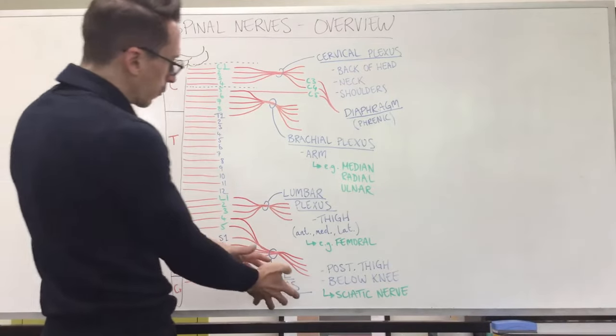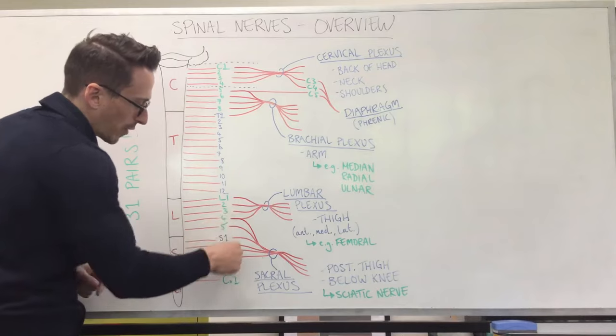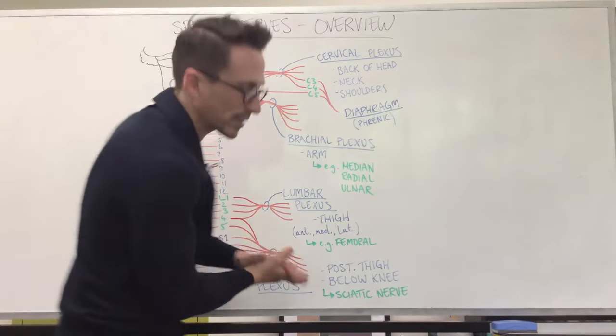If we go down and look at the sacral plexus, that's L4 to S4. Lumbar 4, lumbar 5, sacral 1, 2, 3, 4, and 5 forms the sacral plexus.